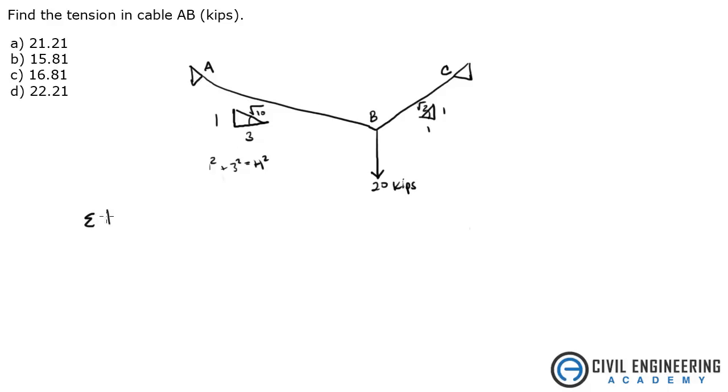So the first thing we're going to do is take sum of the forces in the x direction. And if we're looking at a free body diagram, we've got 20 kips here, and then off of that we have tension BC, and off of that we have tension AB.